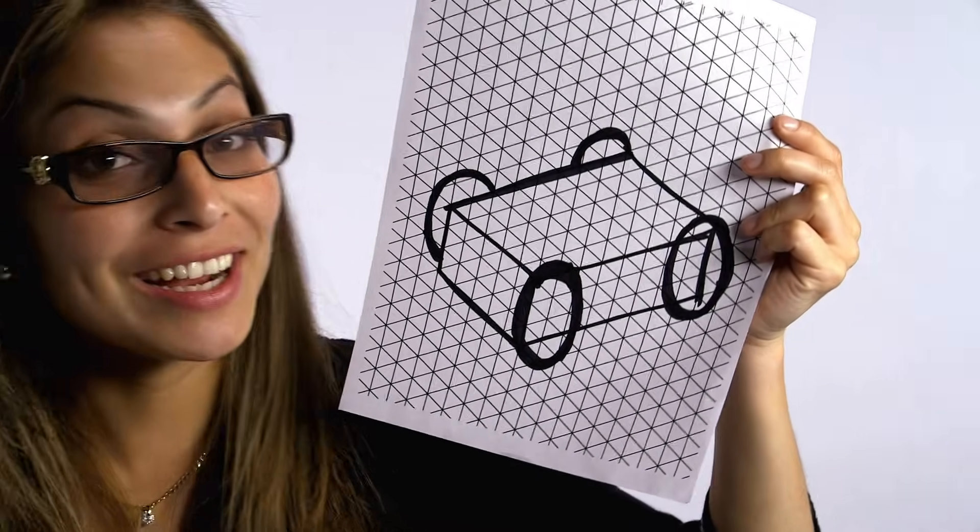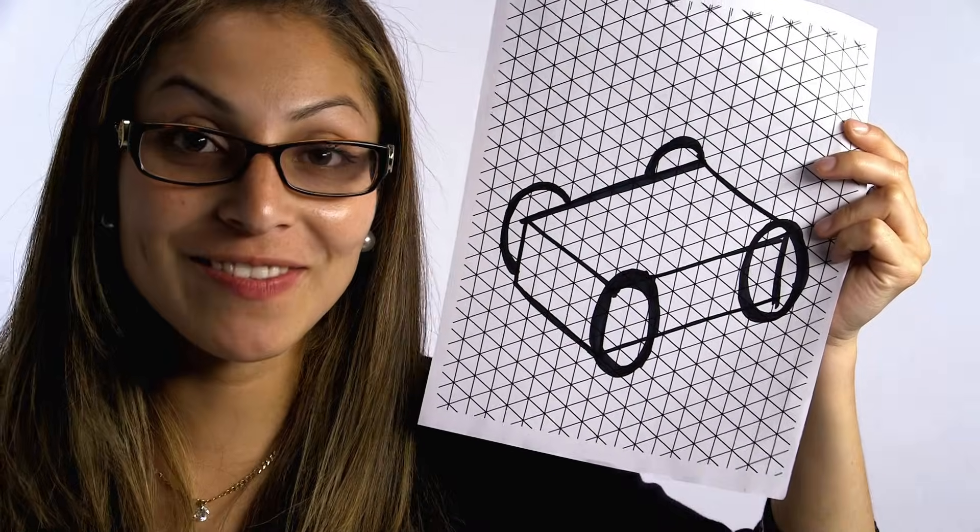You see that? The wheels look like they're coming out of the page. Now let's draw the rest of the fan car.